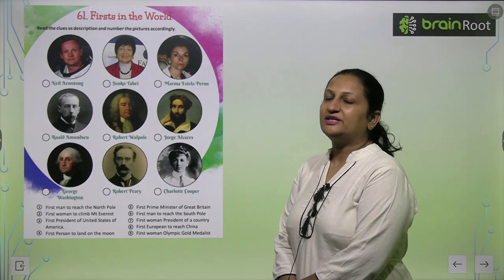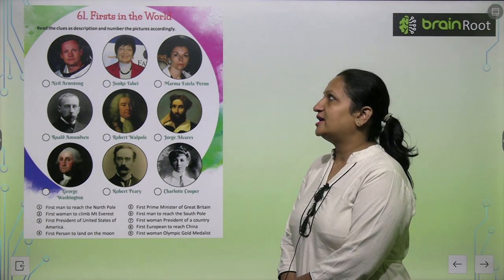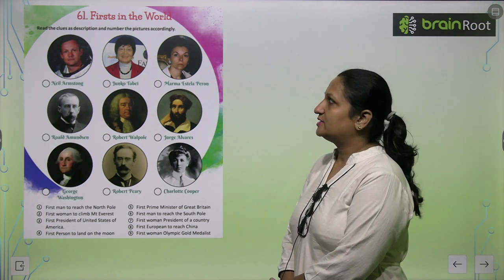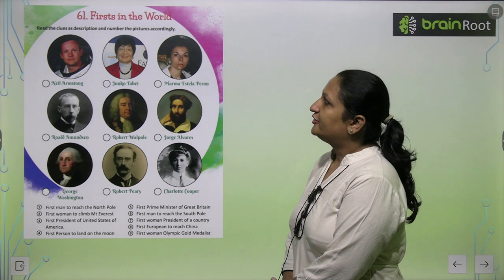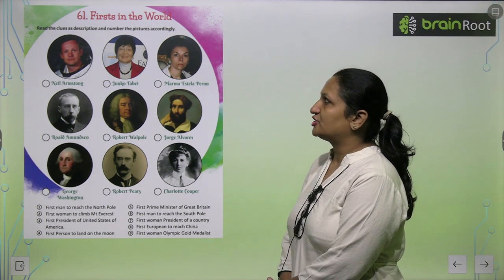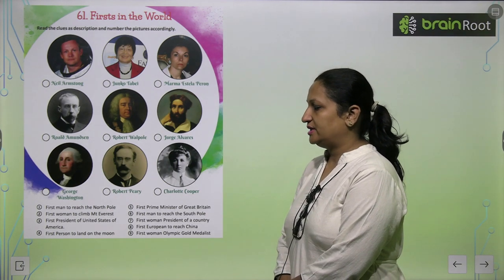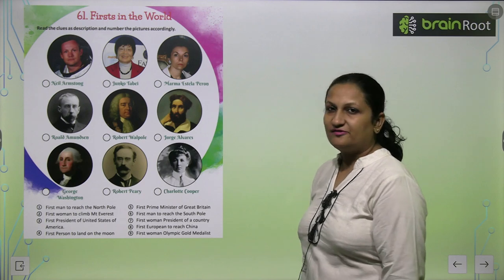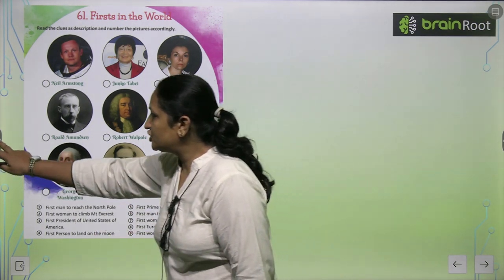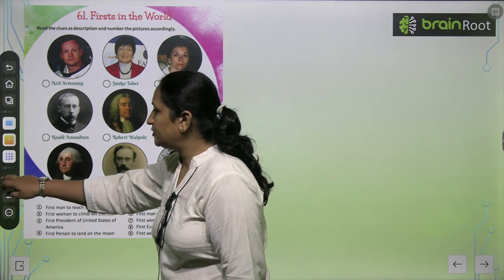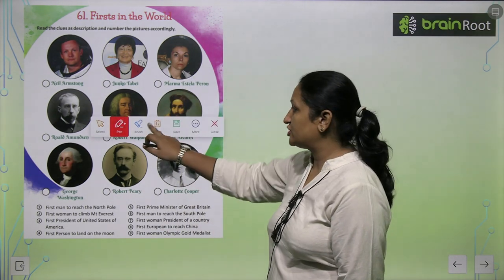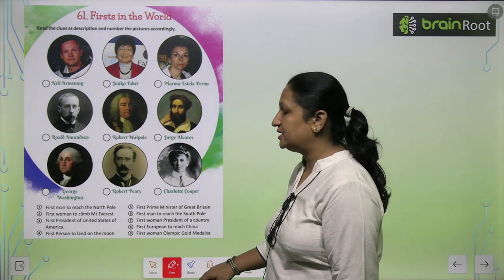Children, let's begin with chapter number 61 — 'First in the World.' Read the clues as descriptions and number the pictures accordingly. See the first clue: First man to reach the North Pole. So the first person who reached the North Pole — who was he?